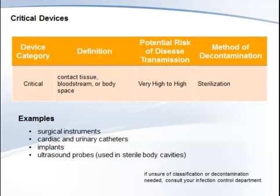Critical items confer a high risk for infection if they are contaminated with any microorganism. Objects that enter sterile tissue or the vascular system must be sterile, because any microbial contamination could transmit disease. This category includes surgical instruments, cardiac and urinary catheters, implants, and ultrasound probes used in sterile body cavities, just to name a few.